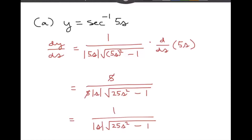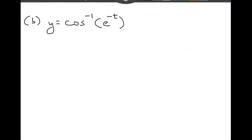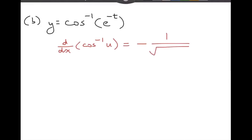Next example: find the derivative of y equals the inverse cosine of e to the negative t. Let me write down the formula — the derivative with respect to x of inverse cosine u. Remember, this is the one that's the opposite of the inverse sine of u, so this is going to be negative one over the square root of one minus u squared, times du/dx.